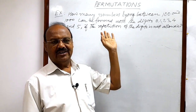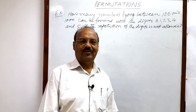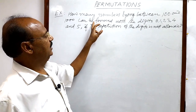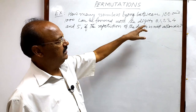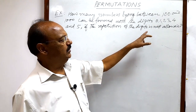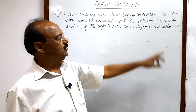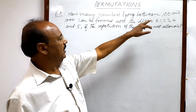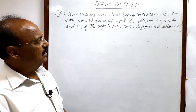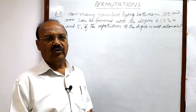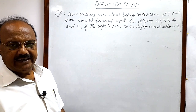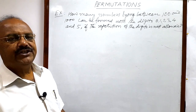Welcome students, let us see this question from the topic permutation. The question is: how many numbers lying between 100 and 1000 can be formed with the digits 0, 1, 2, 3, 4, and 5 if repetition of digits is not allowed? Numbers lying between 100 and 1000 will start from 101 and end with 999, so they will be 3-digit numbers.